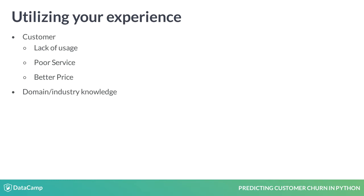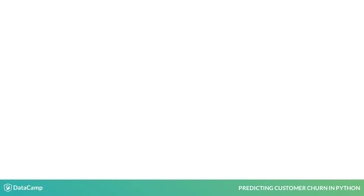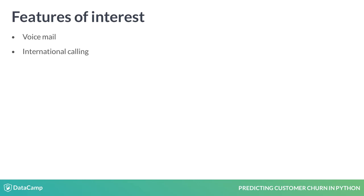In this course, you will learn how to build a churn model from beginning to end. The data you will be using comes from a cellular usage dataset that consists of records of actual cell phone customers and features that include specific features to a customer's cell service, like voicemail and international calling.